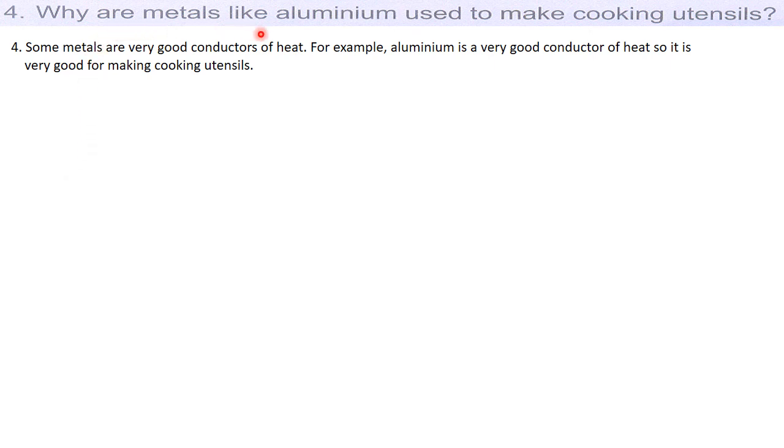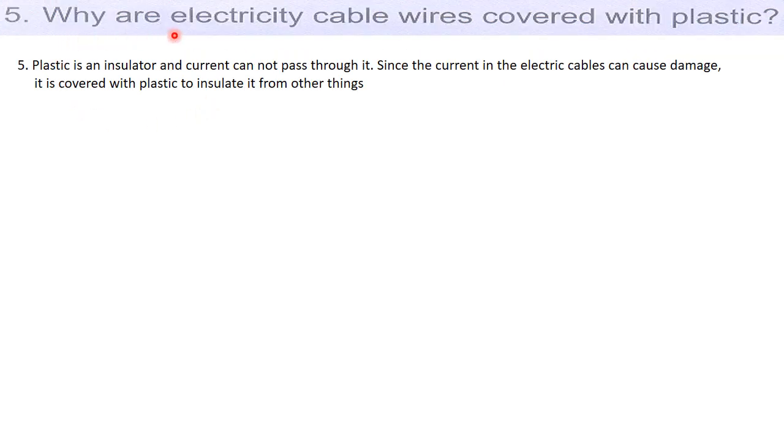Why are metals like aluminum used to make cooking utensils? Some metals are very good conductors of heat. For example, aluminum is a very good conductor of heat, so it is very good for making cooking utensils. Very simple answer. Why are electric cable wires covered with plastic? Plastic is an insulator and current cannot pass through it. Since the current in the electric cables can cause damage, it is covered with plastic to insulate it from other things.